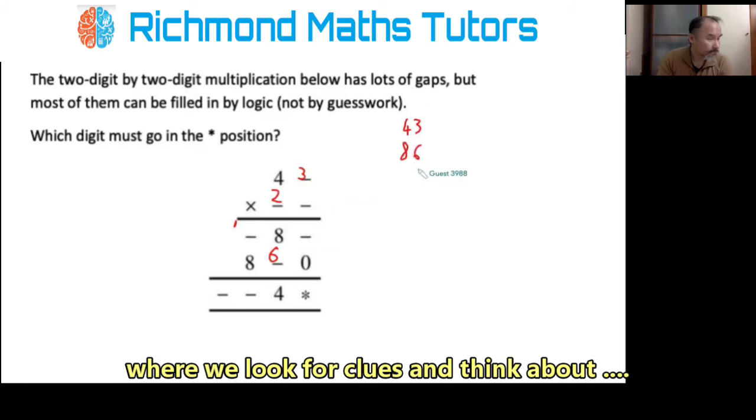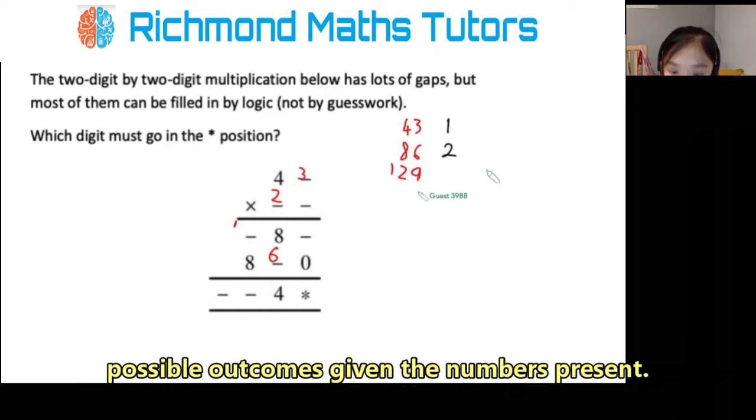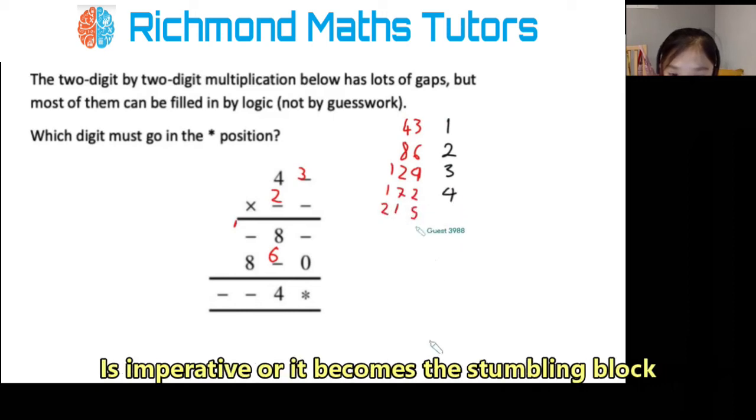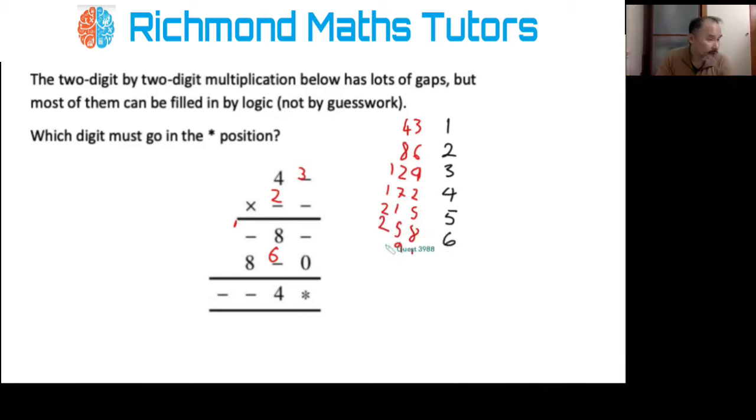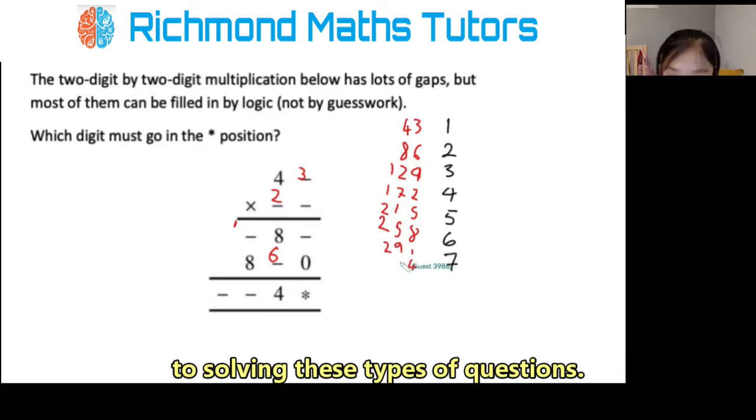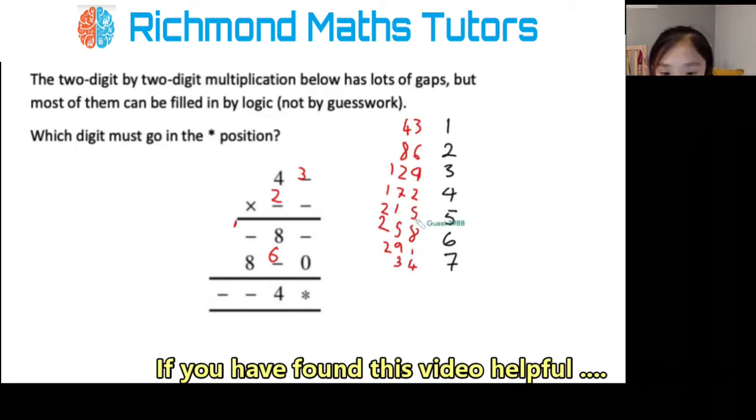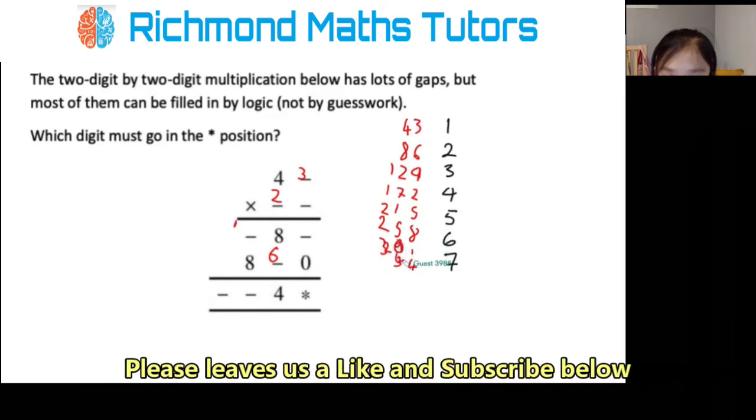Forty-three, eighty-six, one twenty-nine, one seventy-two, two fifteen, two fifty-eight, three oh one... Oh, I think I've done something wrong here. Yes, I have. This should be a three. Three oh one, three forty-three.